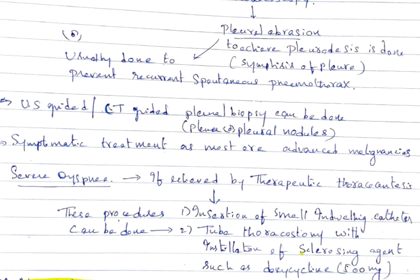Symptomatic treatment is mostly indicated in malignancies because malignancies presenting as pleural effusion and dyspnea are already in advanced stages. Severe dyspnea can be relieved by therapeutic thoracocentesis. You can try procedures like insertion of small indwelling catheter, tube thoracostomy with installation of sclerosing agent such as doxycycline 500 milligrams.